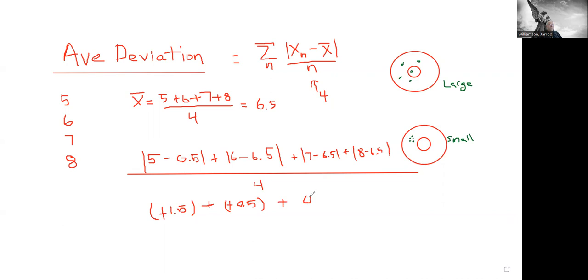Plus 0.5 plus 1.5. I have to take the absolute value of that, so I leave a positive. I'm going to divide all this by 4.